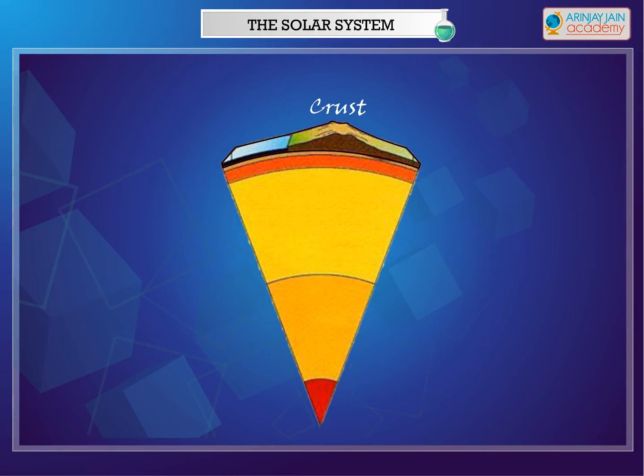The outer solid surface of the Earth is called the crust. It is the coolest layer. We live on this layer. Mountains, rocks, rivers, valleys, and plains are all present on the crust.